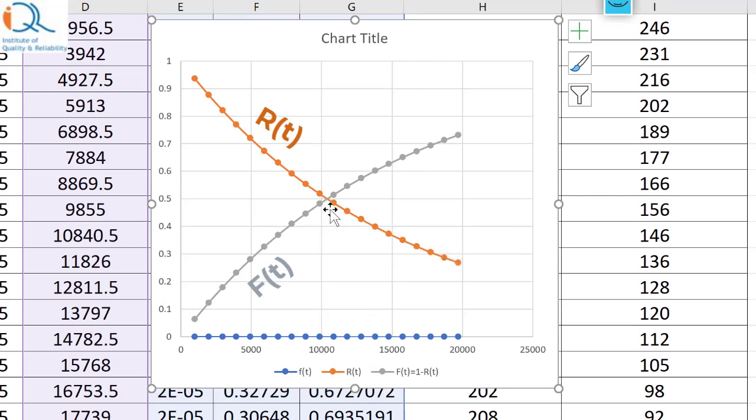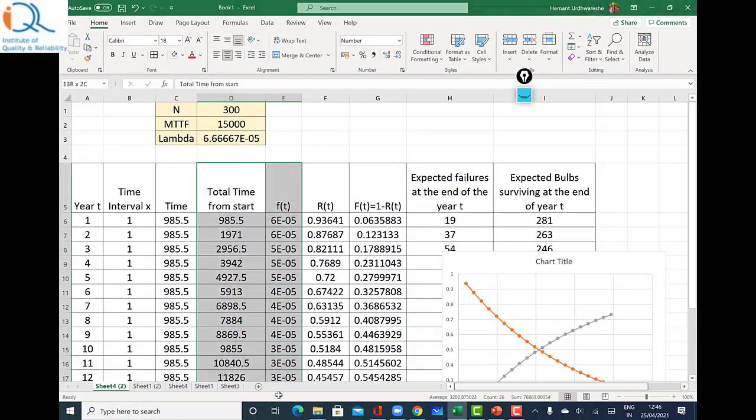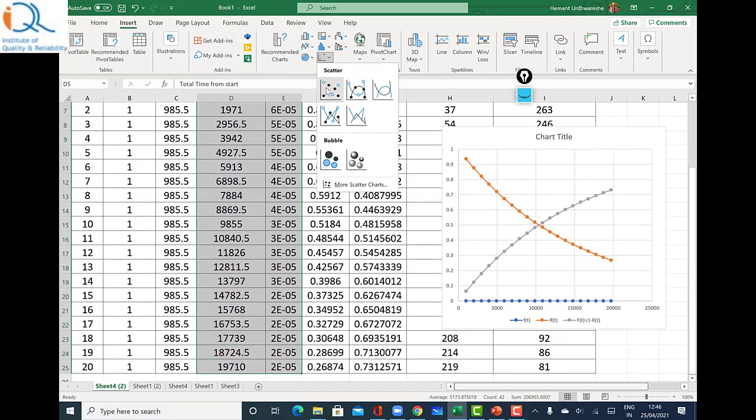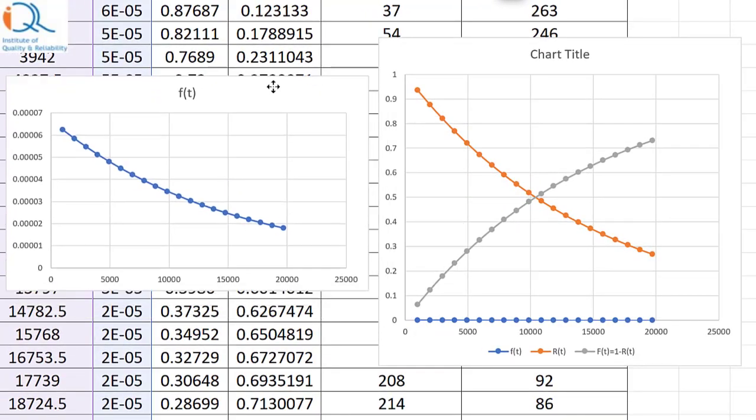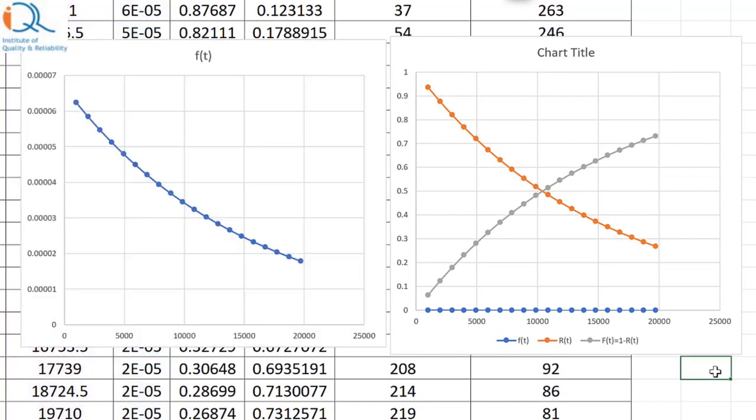Obviously the two functions are complementary and would always total up to one. If you just want to see the f of t actually you need a little finer scale so you need to select only these two and then you can see clearly what's happening over there. And you can see that it drops down over a period of time. So these are the three functions that you can see.